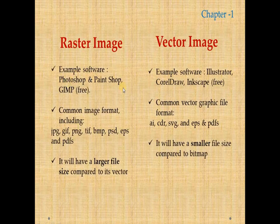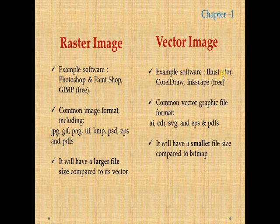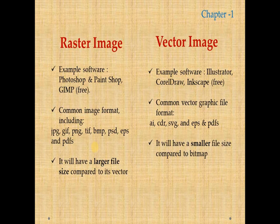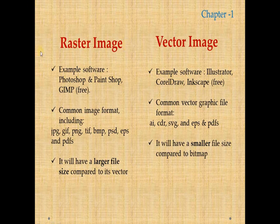Software like Photoshop, Paint Shop, and GIMP produce raster images. Formats like JPG, GIF, and PNG belong to raster images. Software like Illustrator, CorelDRAW, and Inkscape produce vector images. As a computer science student, you should know the file format — by right-clicking the file you can view the properties and find out whether it is a raster or vector image. Keep in mind: if you need to enlarge an image, use a vector image for a clear output.